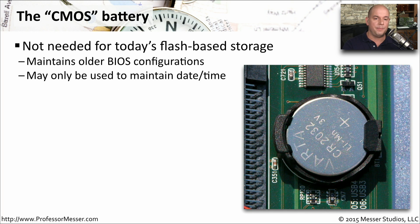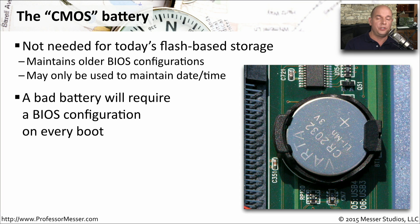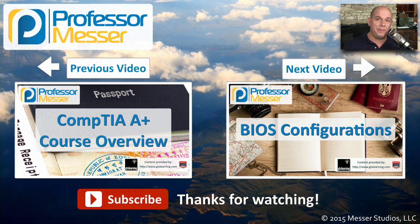On older motherboards, you'll see a battery used to provide constant power to maintain BIOS settings. If you unplug your computer and move it, it will still retain BIOS configurations because the battery was there. Even on newer motherboards, a battery is still used to maintain the date and time so you don't have to reset it every time you boot. If this battery goes bad, you'll get a message every time it boots saying all BIOS settings have been removed, and you'll have to reconfigure everything each time you power up. On older systems, you could reset the BIOS — including removing stored passwords — simply by removing the battery, resetting everything back to factory defaults.